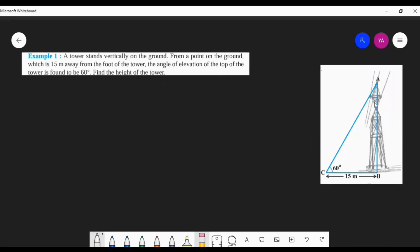The angle of elevation of the top of the tower is found to be 60°. From a point in the picture, it is marked as C. That point is 15 meters away from the foot of the tower.